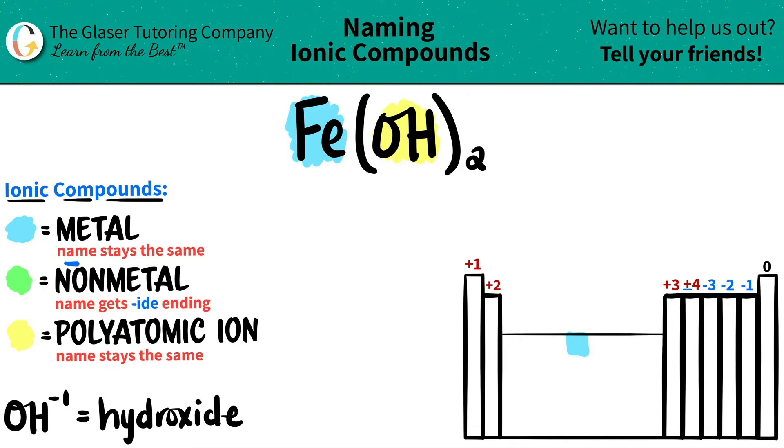The metal name always stays exactly the same. So the iron, which was the metal, is just going to stay iron. And now since OH is a polyatomic, those names always stay the same. That's why we have to memorize them. So this would be iron hydroxide.